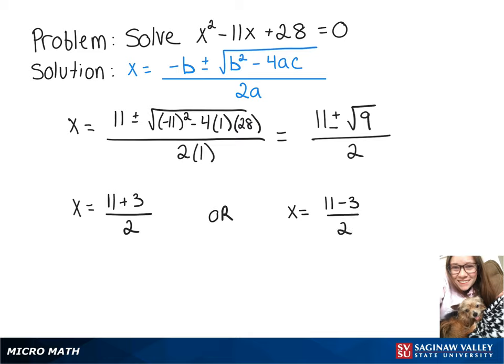So 11 plus 3 gives us 14 divided by 2 will give us x equals 7, or 11 minus 3 is 8 divided by 2 gives us x equals 4.